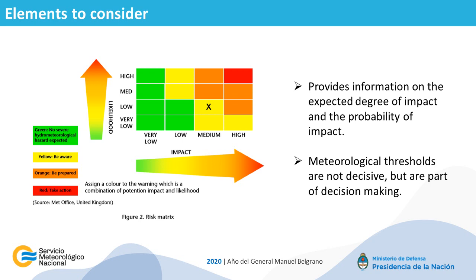In contrast to the traditional threshold-based weather warning system, this approach allows progressively expressed changing expectations of risk as a function of varying exposure, vulnerability and hydrometeorological likelihood. So the assessment of vulnerability and exposure can change the color of the warning compared with the situation if only likelihood were considered. We can have, for example, a yellow or orange warning with low likelihood but high impact. Meteorological thresholds are part of the decision here, but they are not the only thing to be considered.